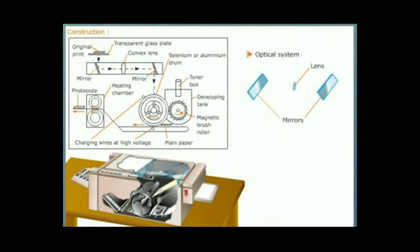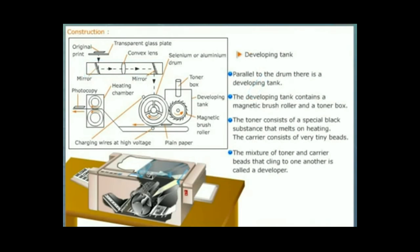Here you can see the optical system that focuses the light on the exposure slit. An optical system consists of a number of mirrors and a lens. Parallel to the drum, there is a developing tank. The developing tank contains a magnetic brush roller and a toner box. The toner consists of a special black substance that melts on heating. The carrier consists of very tiny beads. The mixture of toner and carrier beads that cling to one another is called a developer.